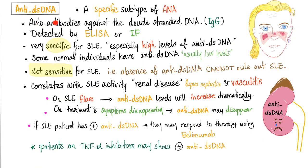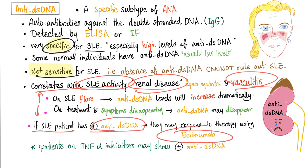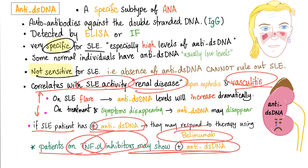Anti-double-stranded DNA is an antibody against the double-stranded DNA. It is very specific for lupus, but it's not sensitive. It correlates with lupus activity, renal disease, and vasculitis. When you have a flare, you will have high levels; when you treat the flare, you will have low levels. If a lupus patient has positive anti-double-stranded DNA, they may respond to treatment. If a patient is on TNF-alpha inhibitors, they may show positive anti-double-stranded DNA.